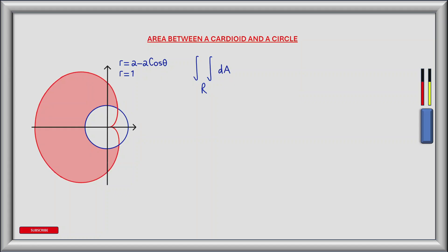We know that the area across a polar region is given by the double integral across the region of infinitesimally small slices of area denoted by dA. This translates to the region being defined by an inner integral which integrates in the r direction between two values of r, and an outer integral which defines the region as we rotate about theta between two values of theta. The infinitesimally small pieces of area are defined by r dr d theta.